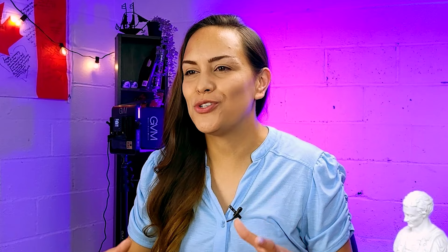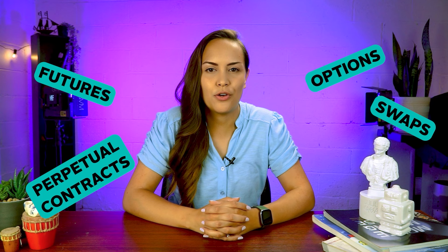We'll look at actual examples shortly when we take a closer look at the types of crypto derivatives. Some of these types include options, swaps, futures, and perpetual contracts, though for this video we're going to focus on the last two. These derivatives generally differ depending on the conditions in the contracts.